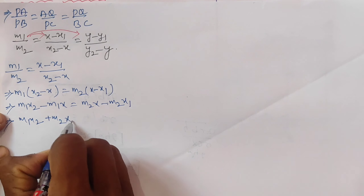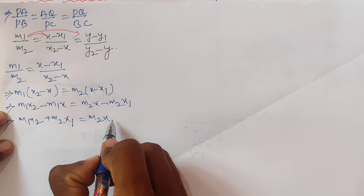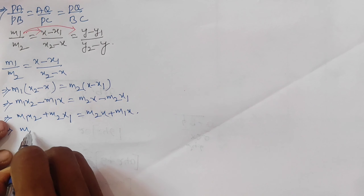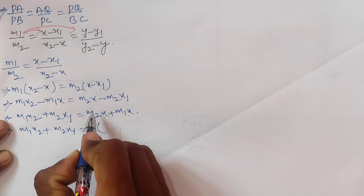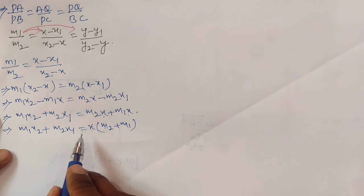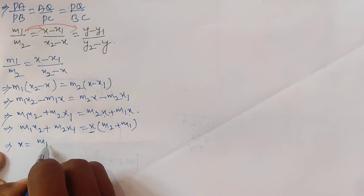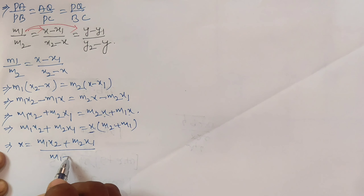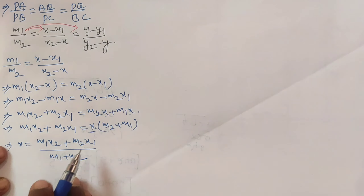Transposing minus m2·x1 to the LHS gives plus m2·x1, and transposing minus m1·x to the RHS gives plus m1·x. So m1·x2 plus m2·x1 equals m2·x plus m1·x. Taking x as a common factor on the right: m1·x2 plus m2·x1 equals x(m1 plus m2). Therefore x equals (m1·x2 plus m2·x1) divided by (m1 plus m2).